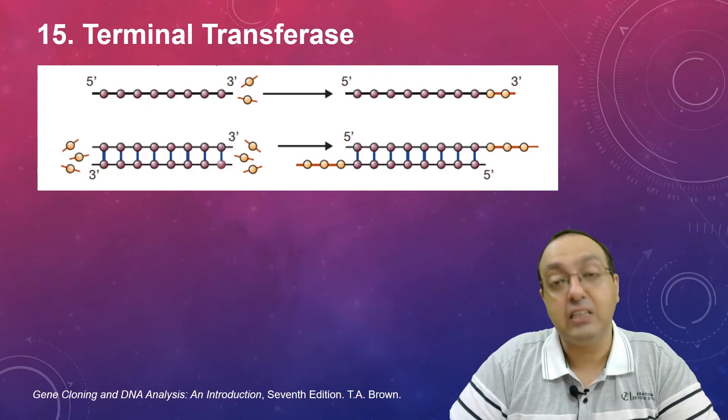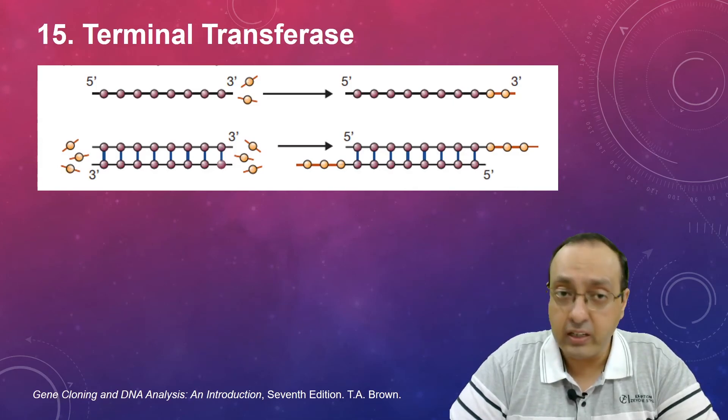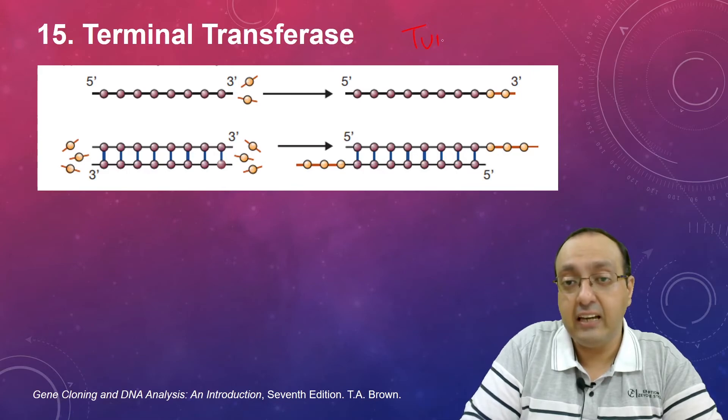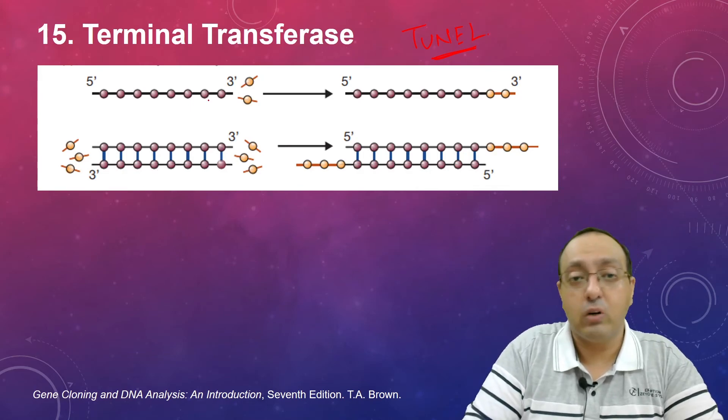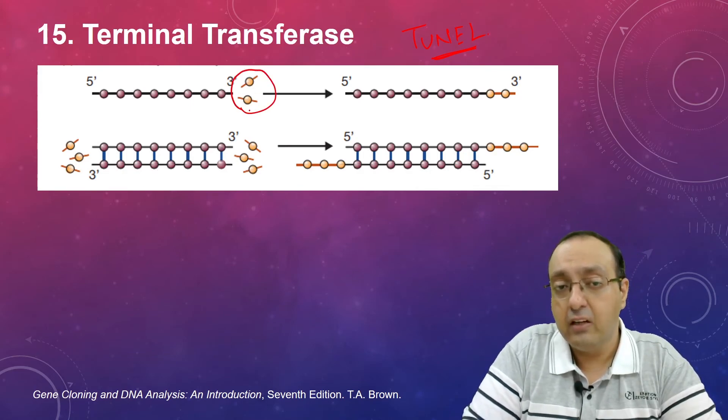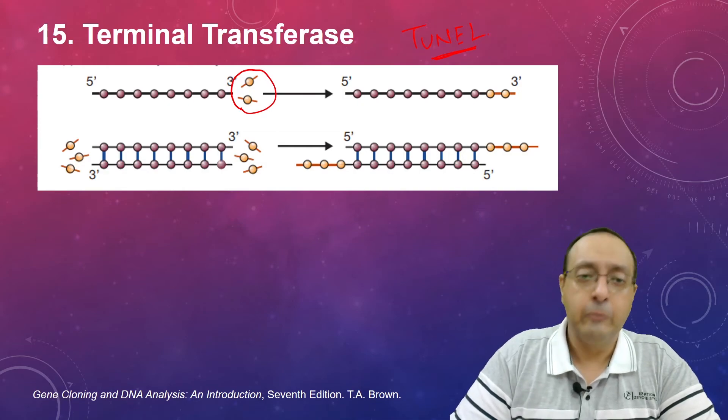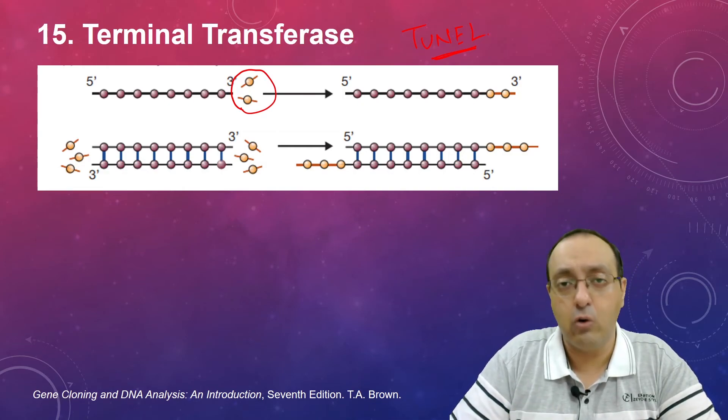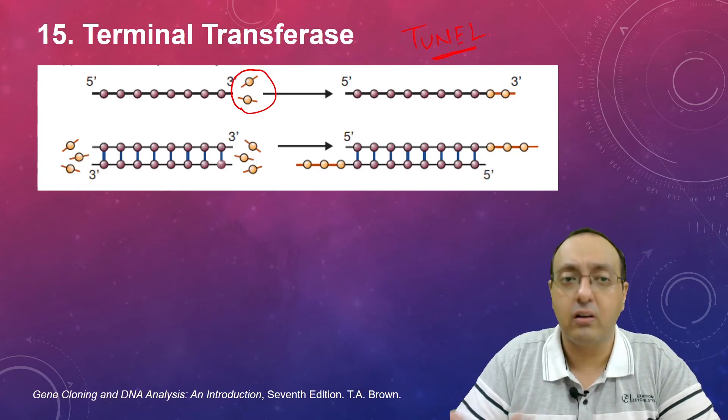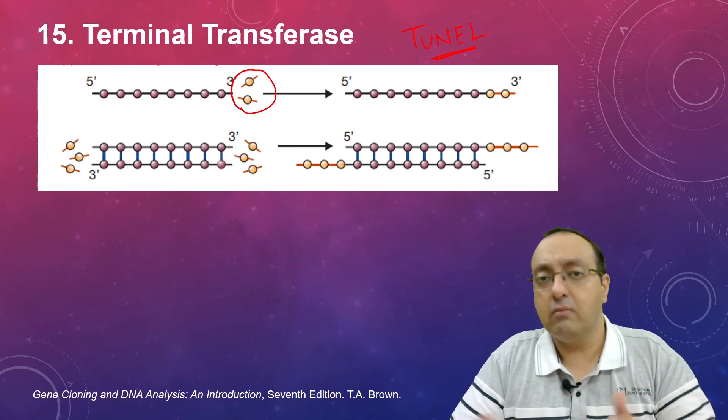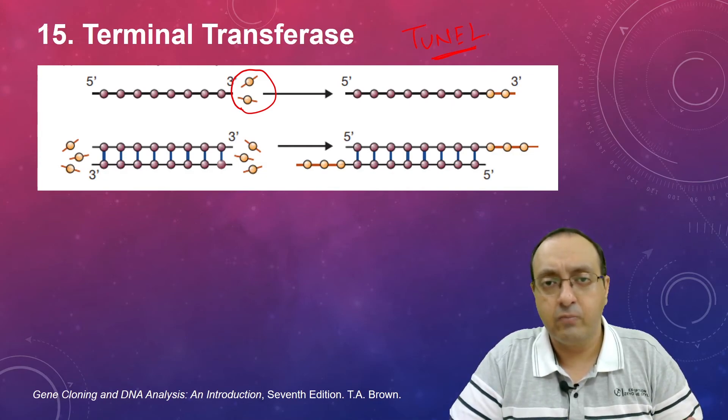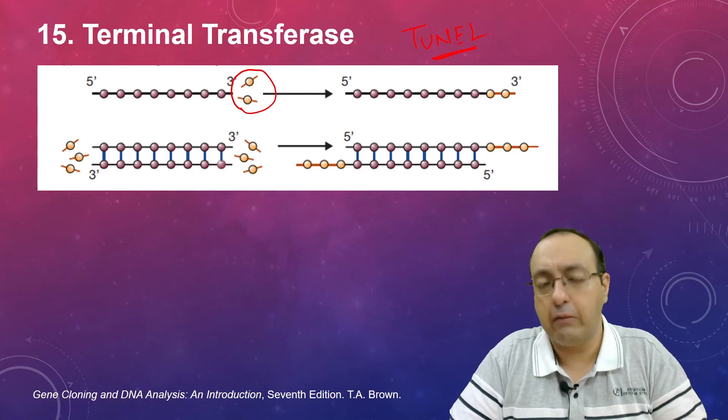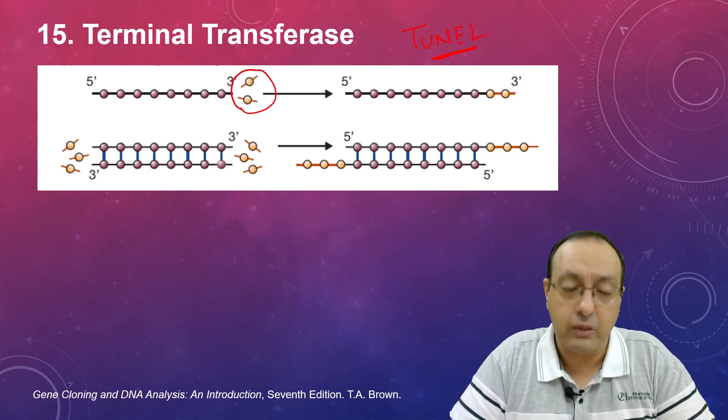Number 15, terminal transferase. Terminal transferase is an important enzyme. It is used in TUNEL assay as well as specific PCR methods which use terminal transferase. What terminal transferase does is it is a non-specific nucleotide adding enzyme, so it is a polymerase but it adds any nucleotide without the need for any template to the three prime end. It is very much used for TUNEL assays as well as making longer DNA or making labeled DNA. For example, biotinylated nucleotides are added to the mixture and those can be added to the DNA molecules and they can be used as probes. So terminal transferase is also pretty useful.